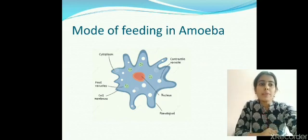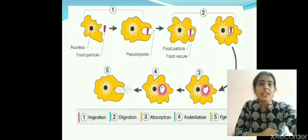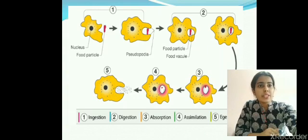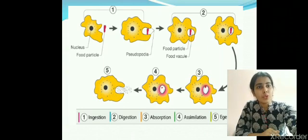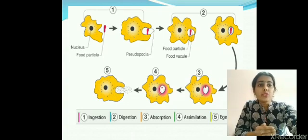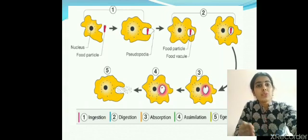How does pseudopodia trap food particles? Look at the picture — the food particle is surrounded by the pseudopodia, and the pseudopodia joins itself to form a food vacuole. So ingestion occurs through pseudopodia. Digestion will occur in the food vacuole where digestive juices are secreted by the animal. Then absorption and assimilation of nutrients will occur, and the waste material will be egested through the body surface of the amoeba.